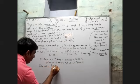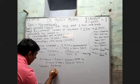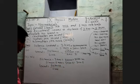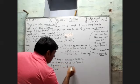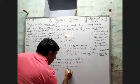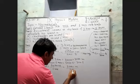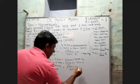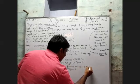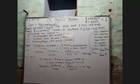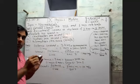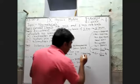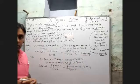Using speed equals distance divided by time: 3000 meters divided by 300 seconds gives 10 meter per second. So the speed is 10 meter per second.